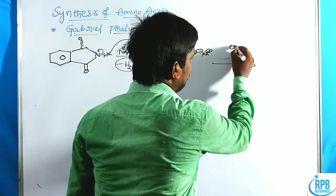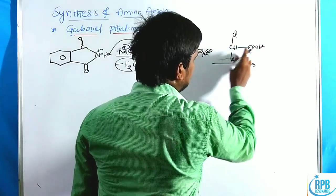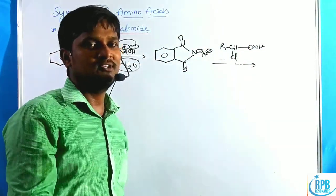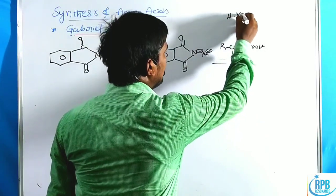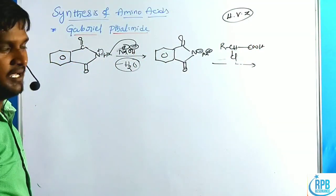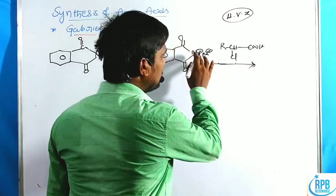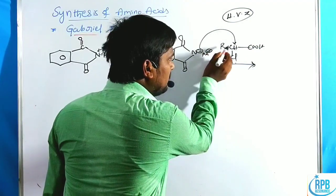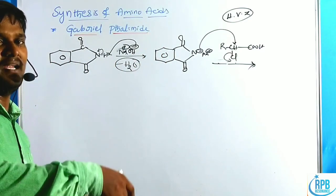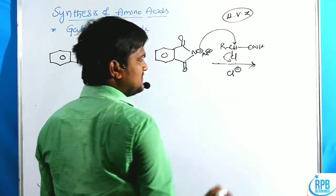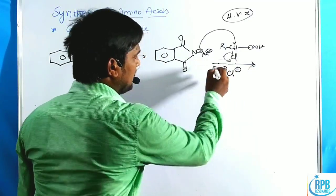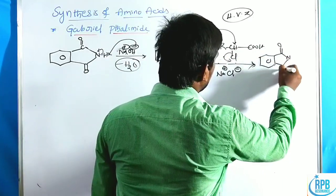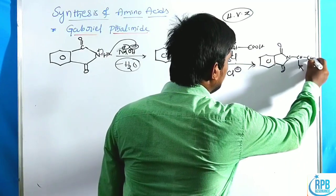We then add the alpha haloester — represented as RCHClCOOEt. Note that both chlorine and bromine can be used; the best method to synthesize alpha halo acids or esters is the HVZ (Hell–Volhard–Zelinsky) reaction. The nitrogen nucleophile attacks the electrophilic carbon of the C-Cl group. The Cl⁻ is eliminated along with Na⁺ as NaCl, and a new N-C bond is formed giving N-substituted phthalimide with a CH(R)COOEt group.